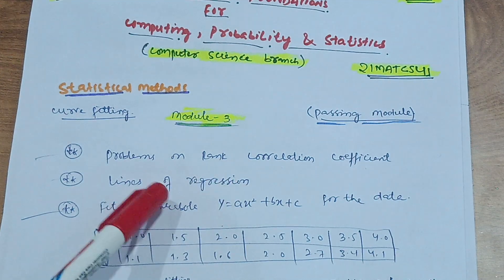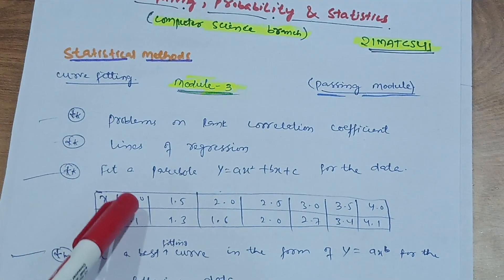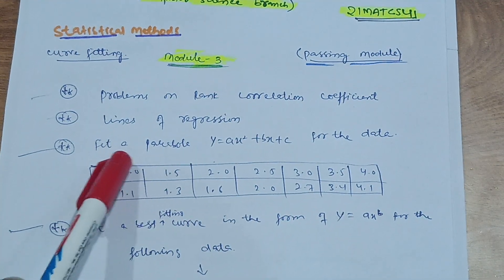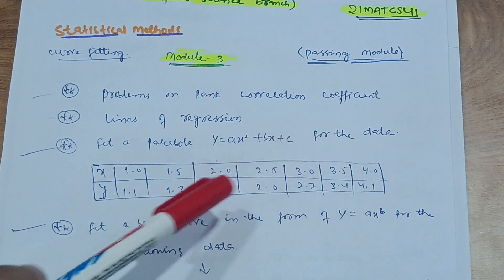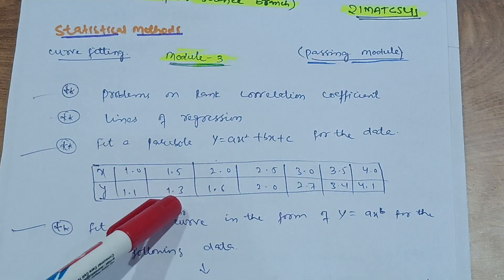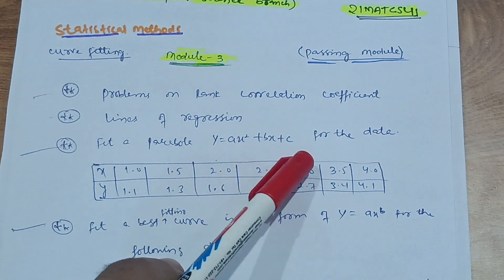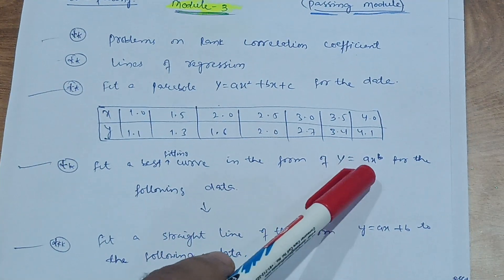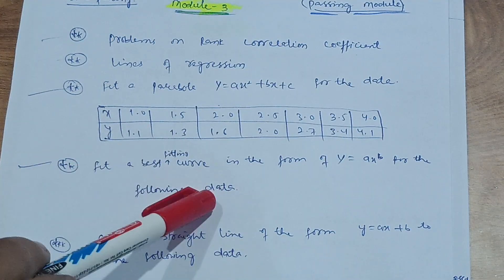Focus on problems on rank correlation coefficient, lines of regression, and curve fitting. There are three varieties of problems that will definitely appear. The first is: fit a parabola y = ax² + bx + c for given data. The second is: fit a best curve in the form y = ax^b for the following data.